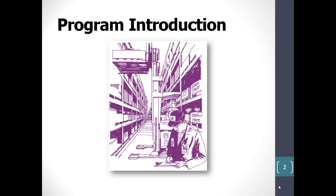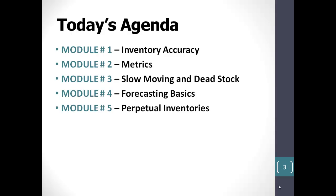Let's go ahead and get started. For ease of comprehension, we've broken down this topic into five modules. Module 1 is titled Inventory Accuracy. During this module, we'll discuss the basic nature of inventory as both a tangible, physical thing and as an intangible concept.